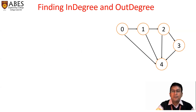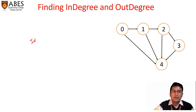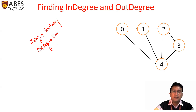Let's take a graph and try to understand what indegree and outdegree are. The indegree represents how many edges are terminating at a given vertex, and the outdegree suggests how many edges are emerging or starting from the given vertex.